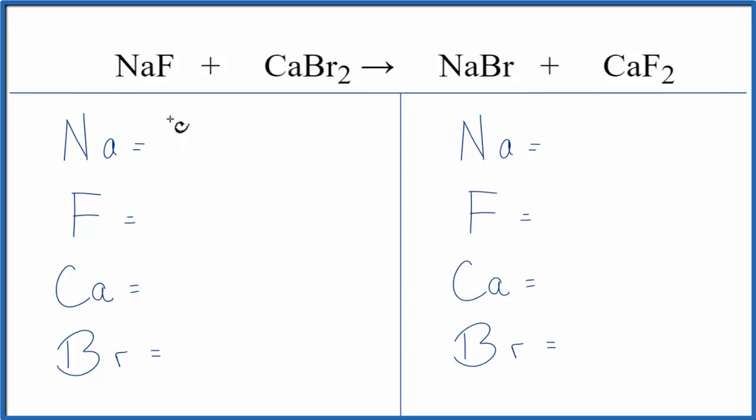So let's add the atoms up on each side of the equation. We have one sodium, one fluorine, one calcium, and then two bromines. Over on the product side we have one sodium, two fluorines, one calcium, and then one bromine.